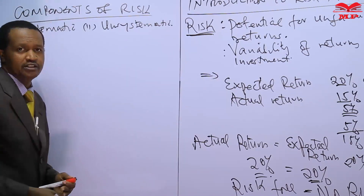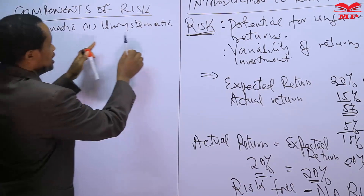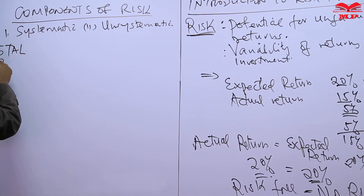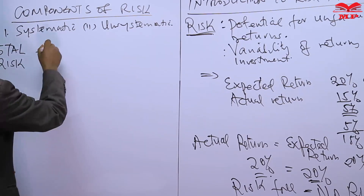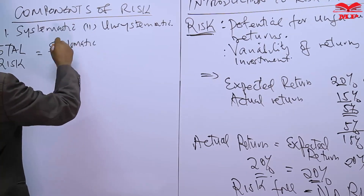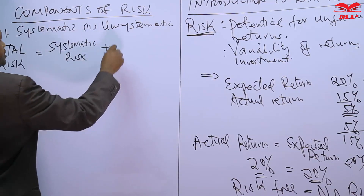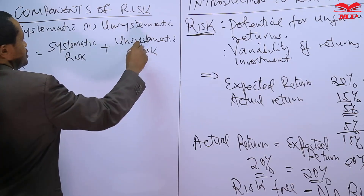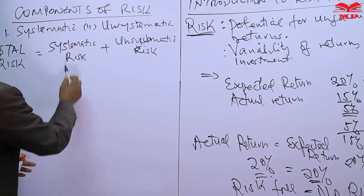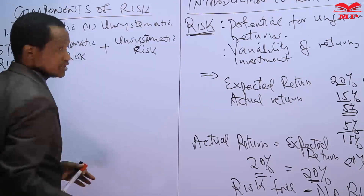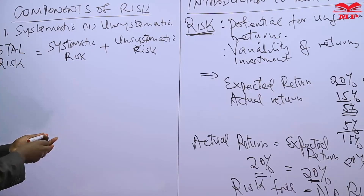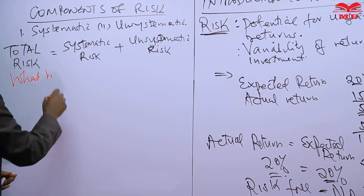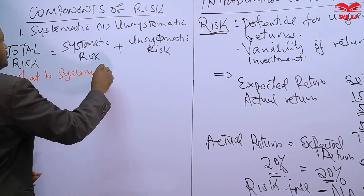Risk can generally be categorized into two: one, systematic risk, and two, unsystematic risk. When you combine both the systematic risk and the unsystematic risk you get what we call the total risk. So total risk is equal to systematic risk plus unsystematic risk.